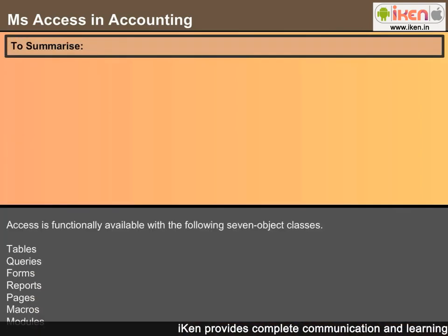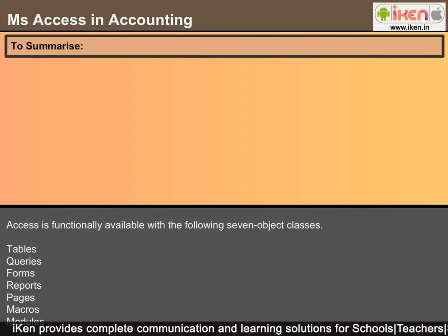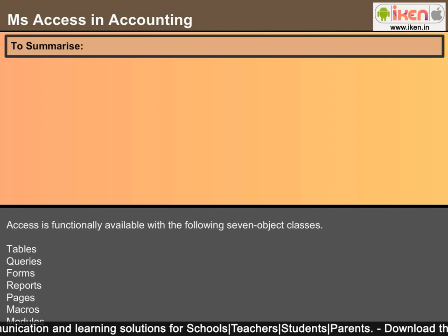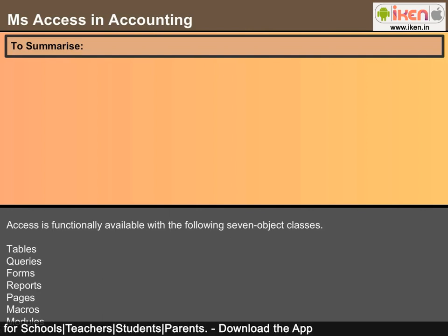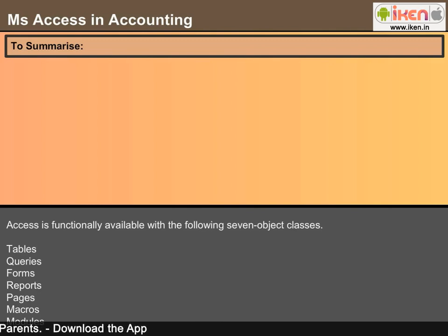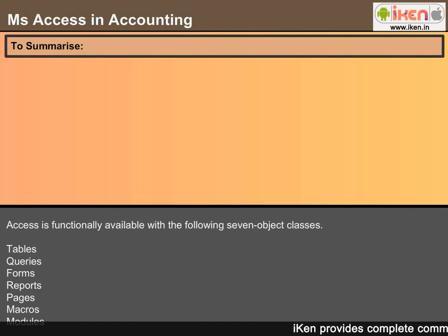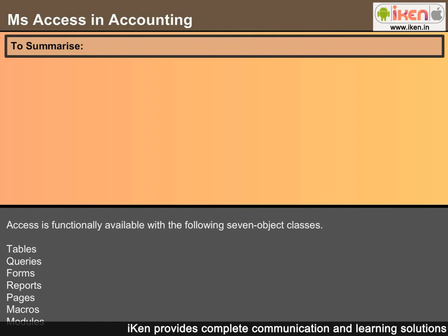To summarize, Access is functionally available with the following seven object classes: Tables, Queries, Forms, Reports, Pages, Macros, and Modules. Microsoft Access is an information management tool that helps store information for reference, reporting, and analysis. It can help overcome the limitations found when trying to manage large amounts of information in Microsoft Excel or other spreadsheet applications.